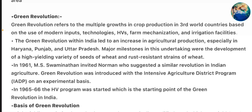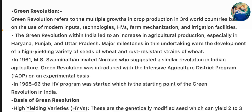Green Revolution refers to multiple growth in crop production in third-world countries based on the use of modern technologies, high-yield varieties, farm mechanization, and irrigation facilities. The Green Revolution within India led to an increase in agriculture production, especially in Haryana, Punjab, and Uttar Pradesh. Major milestones were the development of high-yielding varieties of seeds of wheat and resistant strains of wheat.